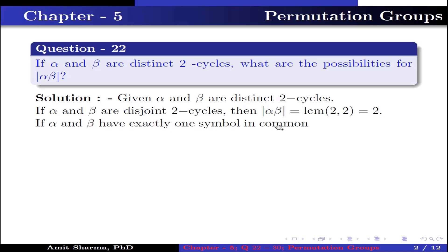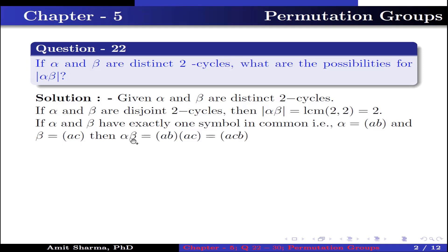If alpha and beta have exactly one symbol in common, that is alpha is (AB) and beta is (AC), then alpha times beta is the product of permutation (AB) with permutation (AC). Here A has image C, C has image B, and B has image A. The product of these two permutations is the permutation (ACB). This implies the order of alpha beta is 3.